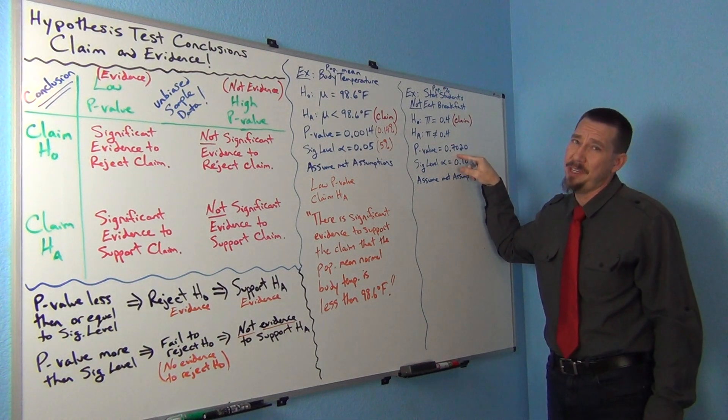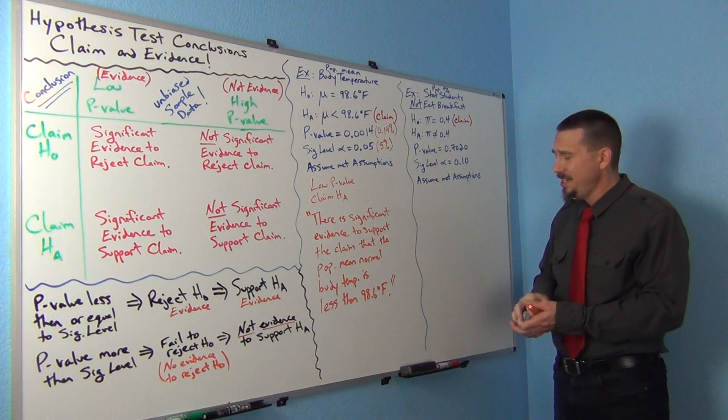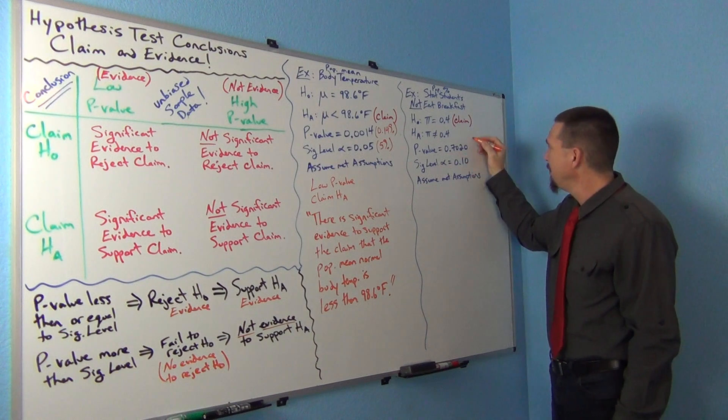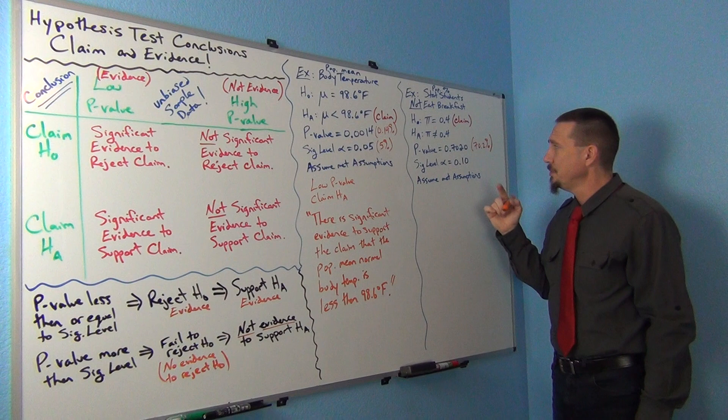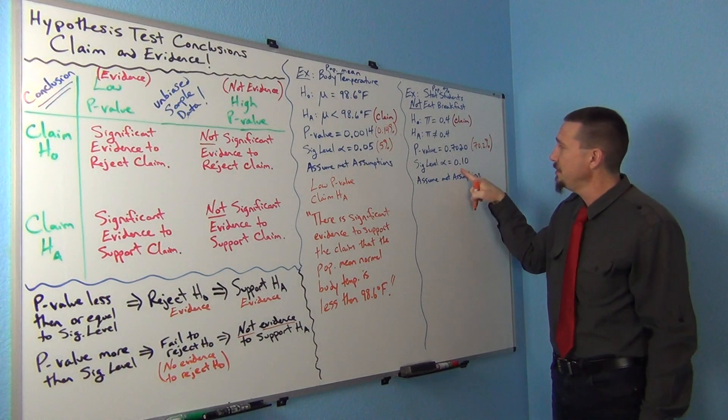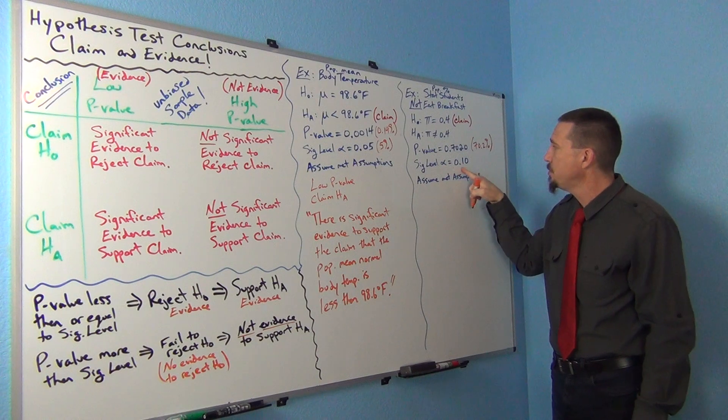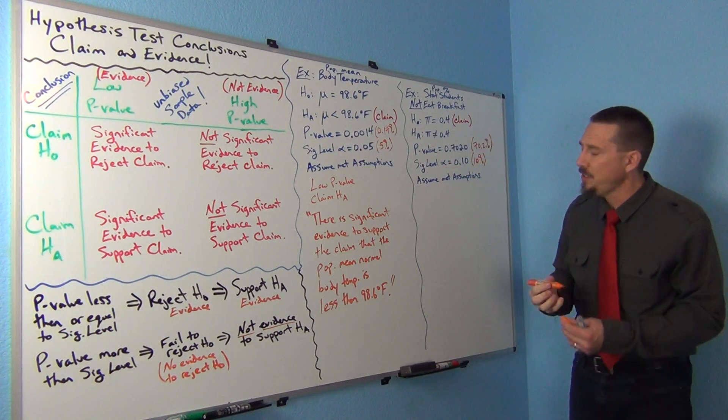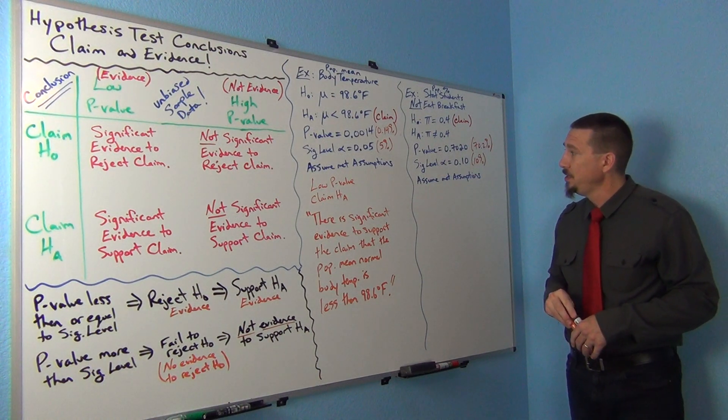That's a really high p-value. P-values are supposed to be close to 0. 0.702, you're talking, if we multiply that by 100 and turn it into a percentage, that would be about 70.2%? That's a really high p-value. It's definitely higher than 0.10, our significance level. So our significance level alpha was 0.10, or 10%. And again, 70% is definitely a lot higher than 10%. So we have a high p-value.